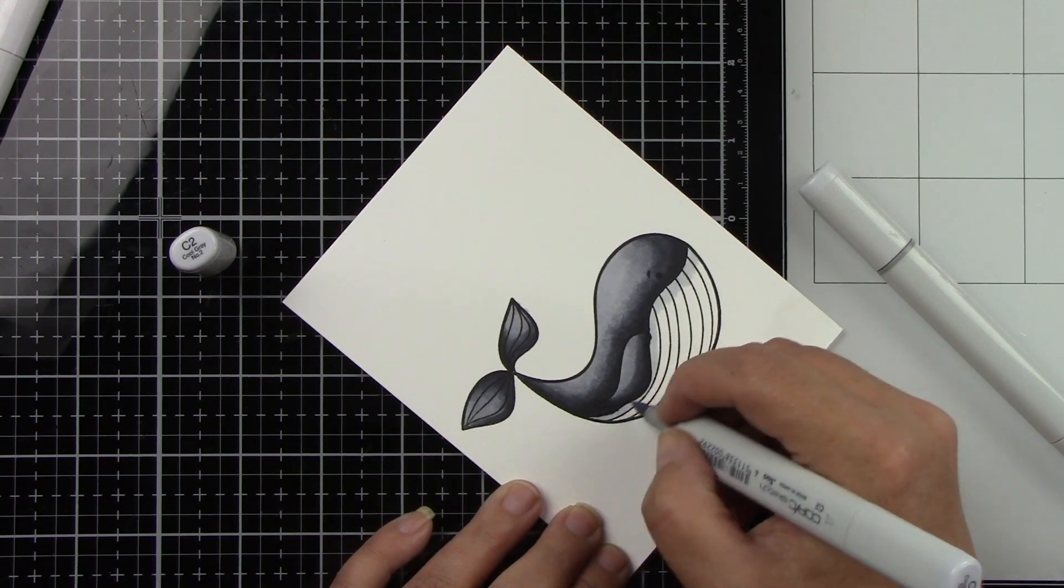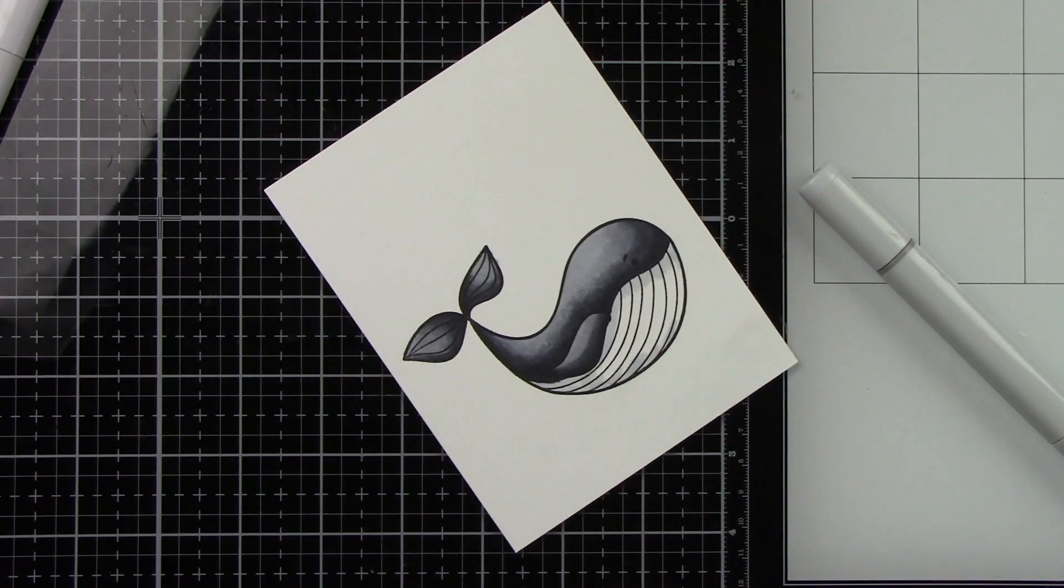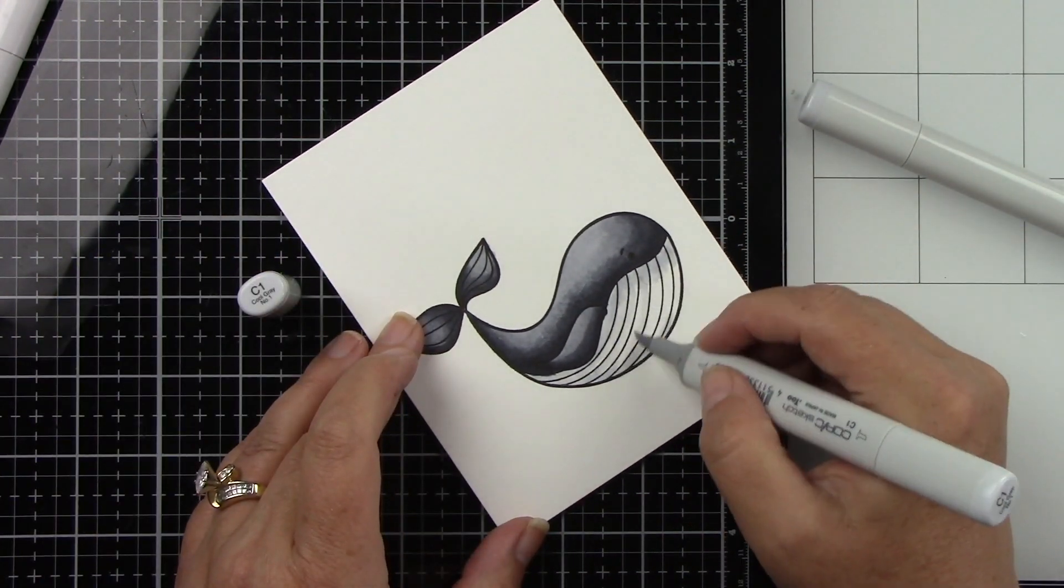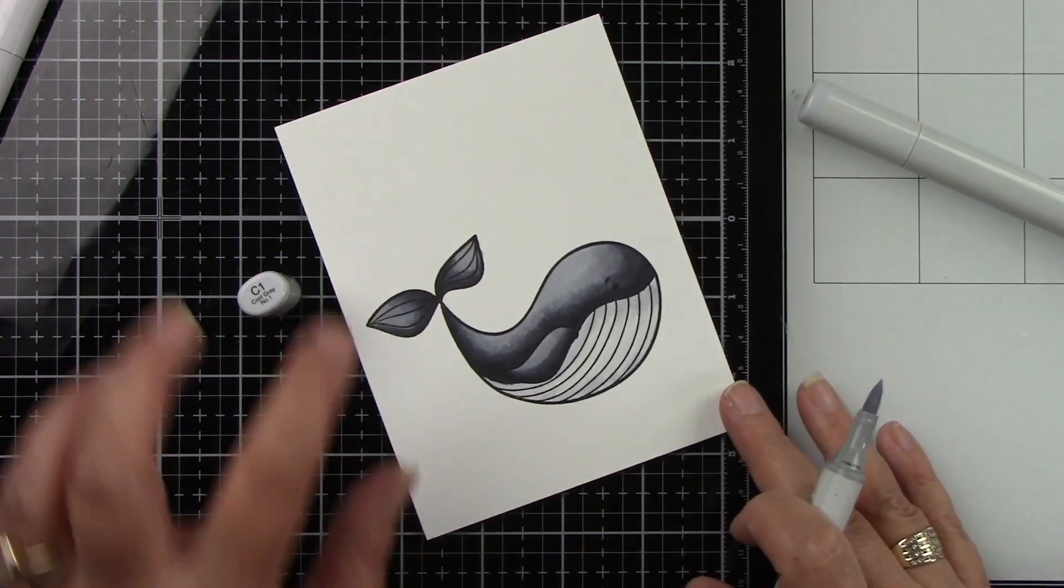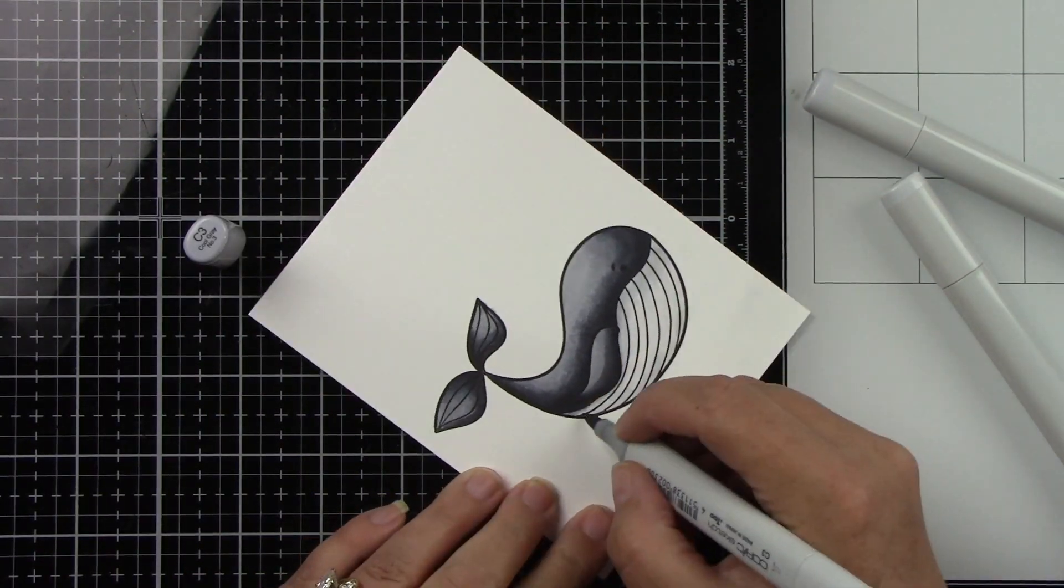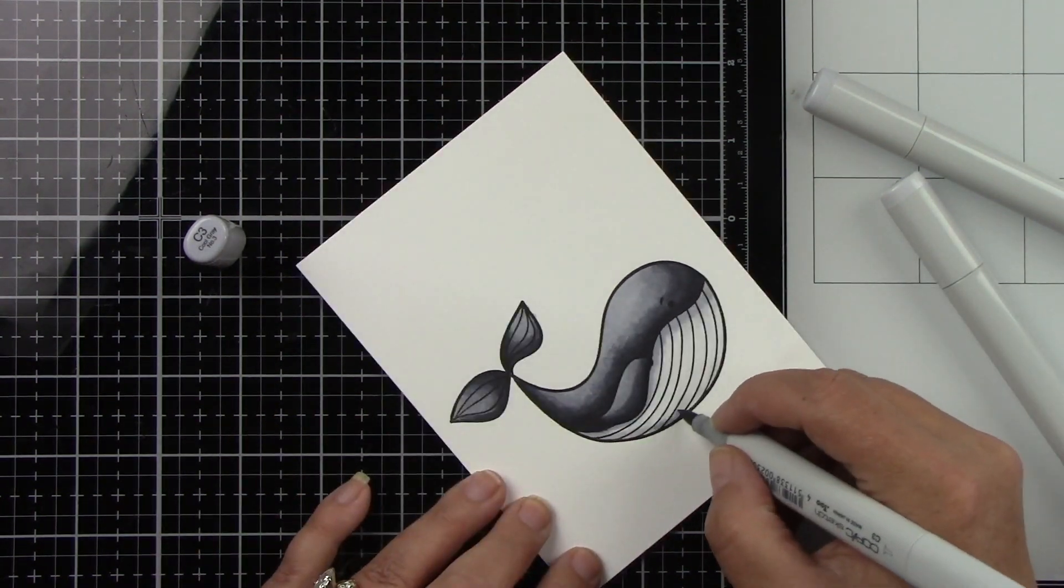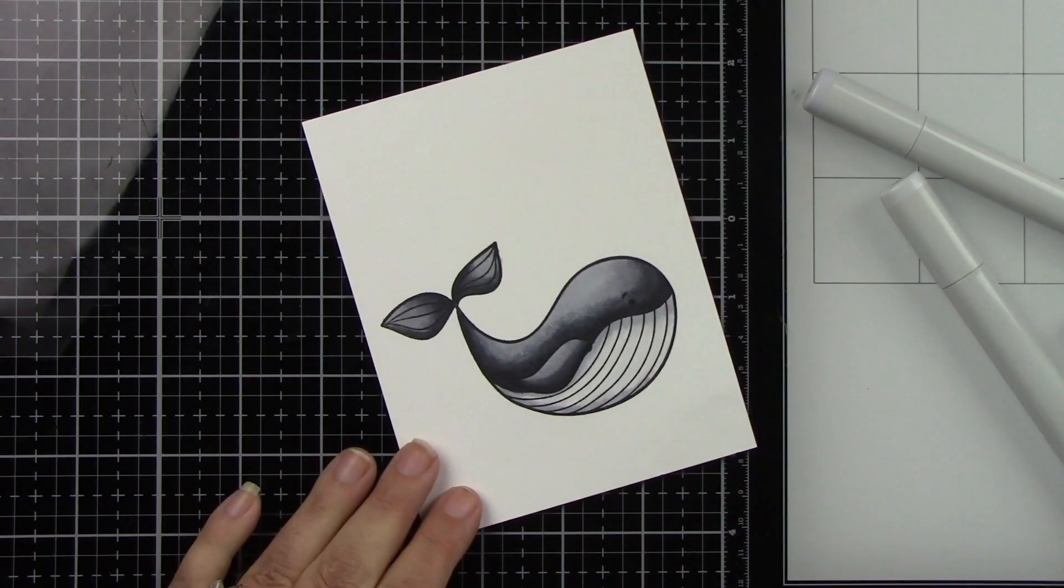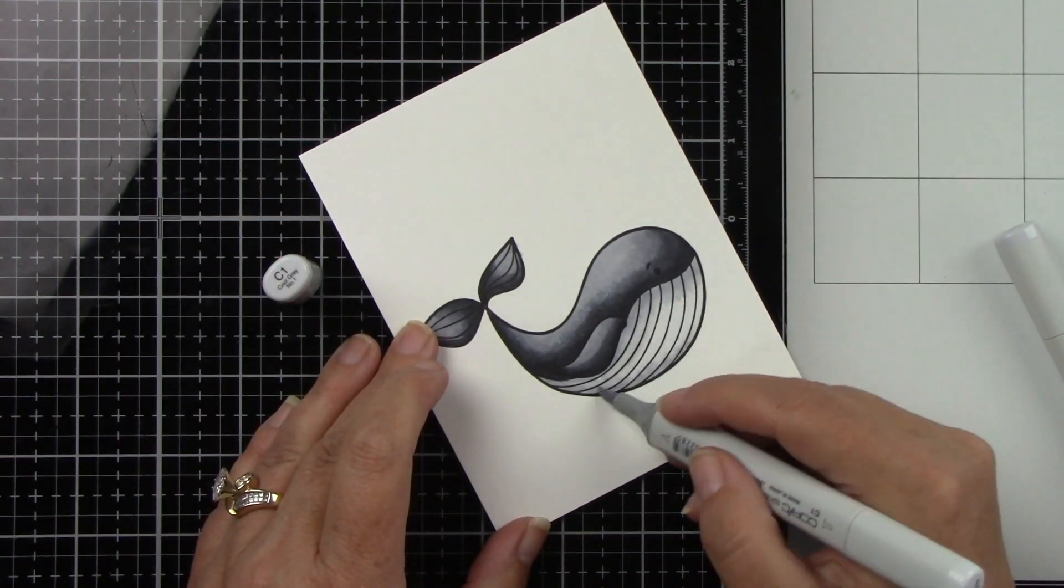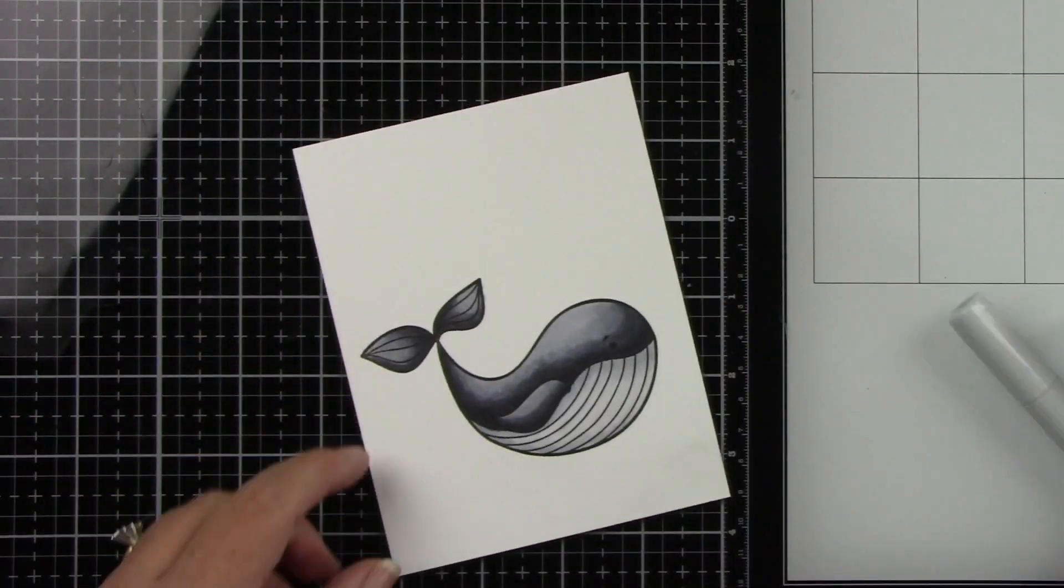Here's the C2. His underbelly is going to be a little bit of a lighter gray. I really like these C colors if you're going for just a straight gray or black. I'm just going to finish coloring him. I did stamp the little water spout that came out of him but I did end up not using it so you can just ignore that part.